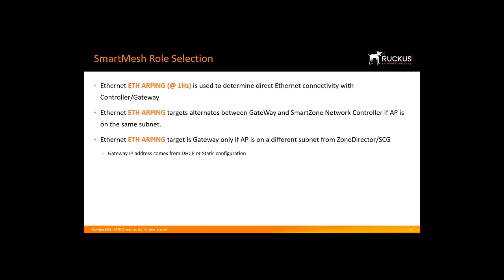The AP gets the IP address of the gateway from either a static configuration or from the DHCP server. If the AP is configured to be a RAP, then it assumes that the gateway IP address will come from a DHCP server. The AP monitors connectivity to a gateway. If there is a 30-second outage, the AP will change roles.